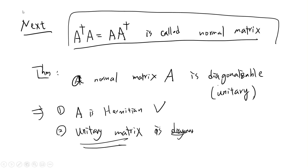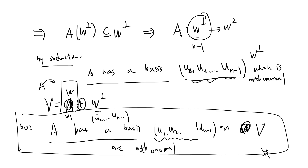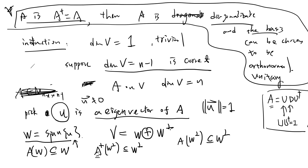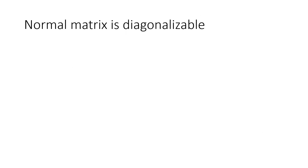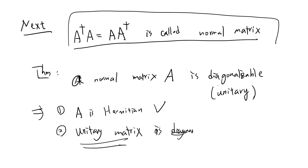In the previous video, I used mathematical induction to prove that a Hermitian matrix is diagonalizable. In this video, we prove the more general result: that A†A = AA† — this is called a normal matrix — and we want to prove that a normal matrix is diagonalizable. More specifically, we want to prove it is unitarily diagonalizable.